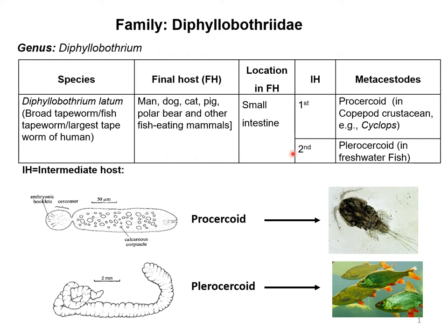The second intermediate host for this particular parasite is different freshwater fish. In this fish, the plerocercoid will be developed. This is the picture of the procercoid — a very tiny structure. You can see the scale bar to understand or assume their size. This procercoid will be developed in Cyclops, and another metacestode called the plerocercoid will be developed in the musculature of different freshwater fish.